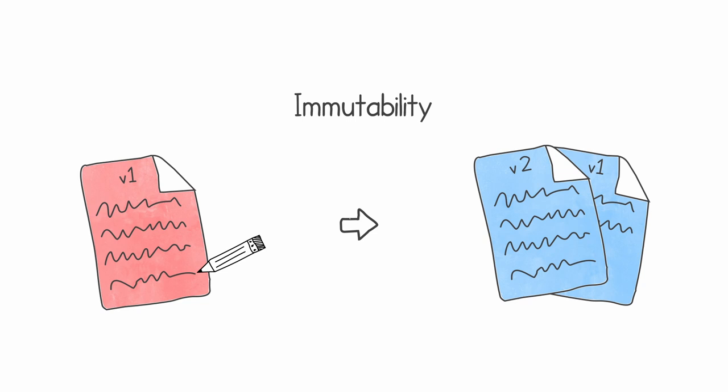The third and final principle is immutability. This means that when we create a new object or a new data structure, we are not allowed to change it — we are not allowed to change the data inside. If we need to modify it, we need to create another copy and leave the original version intact without any changes.